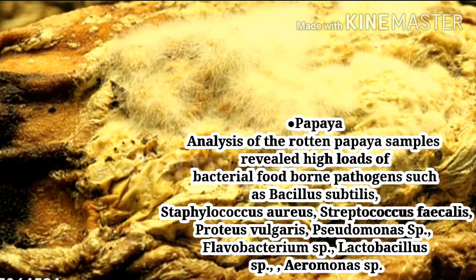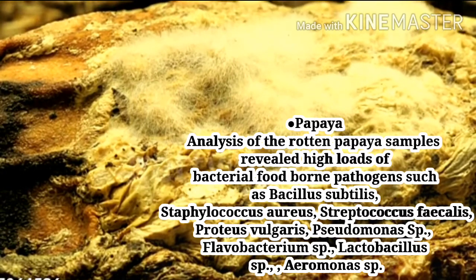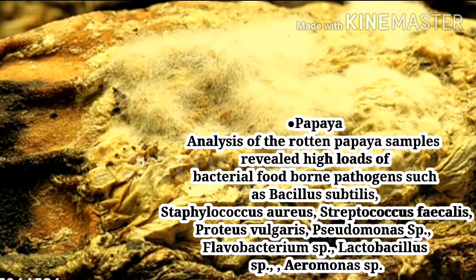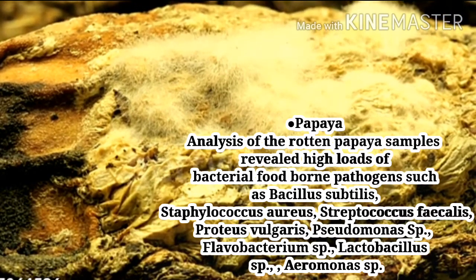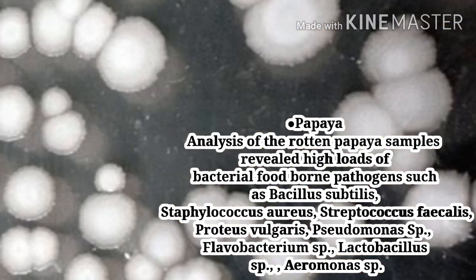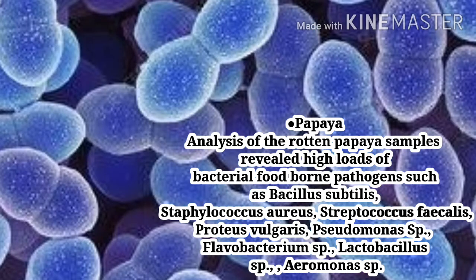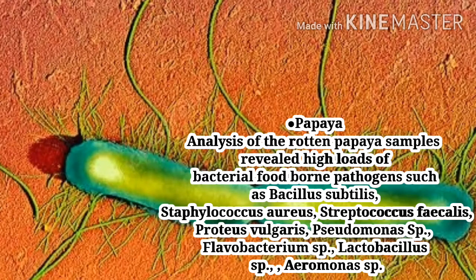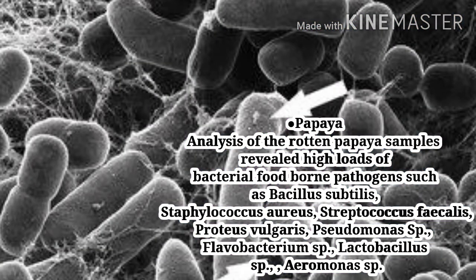Analyses of rotten papaya samples revealed high loads of bacterial foodborne pathogens such as Bacillus subtilis, Staphylococcus aureus, Streptococcus faecalis, Proteus vulgaris, Pseudomonas sp., Flavobacterium sp., Lactobacillus, and Aeromonas sp.